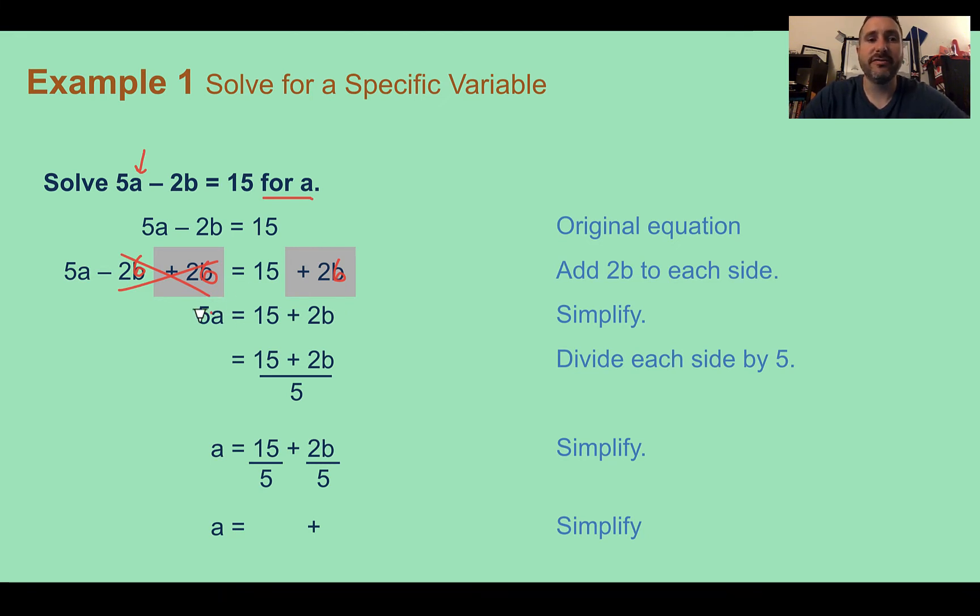My last thing I need to do to get a by itself, this is 5 times a, so I would need to divide both sides by 5. So 5a divided by 5 would be on my left side, 5 divided by 5 is 1, so a is now by itself. And then we'd have 15 plus 2b divided by 5.